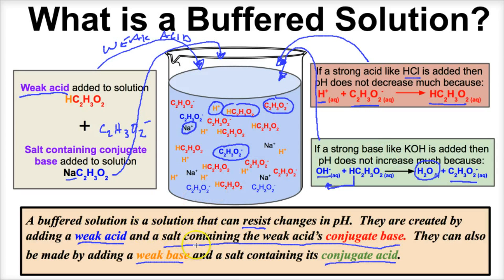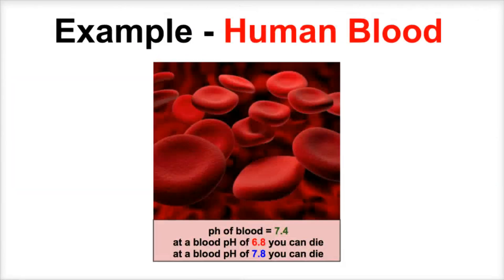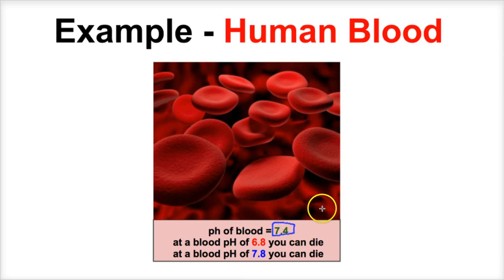Now let's apply this concept to a real-life situation. Human blood has a pH of about 7.4. If the pH of your blood decreases to about 6.8 and becomes too acidic, you can possibly die. If the pH increases to about 7.8, you can also die. So our blood pH needs to stay right around 7.4. Blood is a buffered solution — it has components that make it a buffered solution.